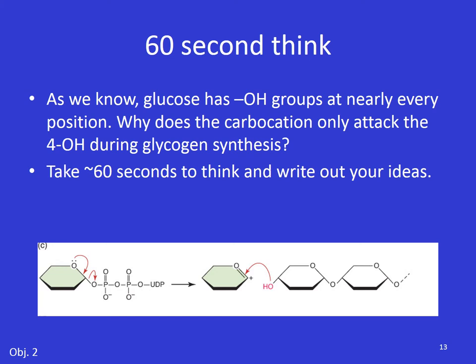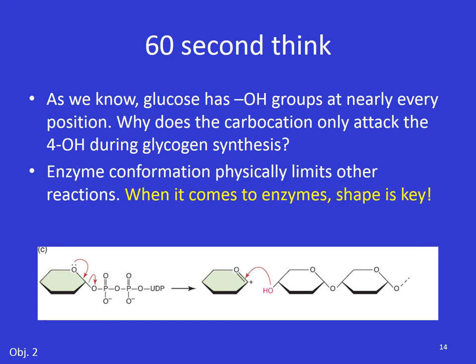Glucose has hydroxy groups at nearly every position, so how come the carbocation only attacks the 4-prime hydroxy during glycogen synthesis — why not the 6-prime or the 2-prime? Remember, the enzyme conformation physically limits other reactions. The shape of the enzyme that facilitates this reaction only allows the 4-prime to face the carbocation. So if the carbocation can't get around to the other positions, it'll only react with what's in front of it. Remember: when it comes to enzymes, shape is key.